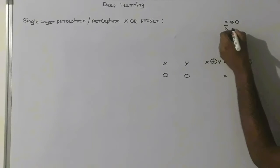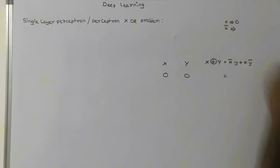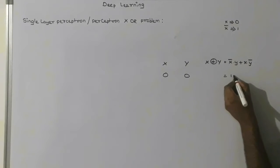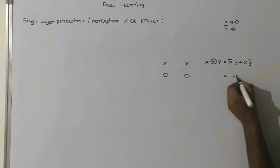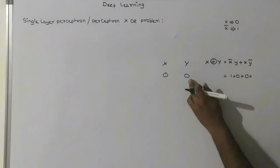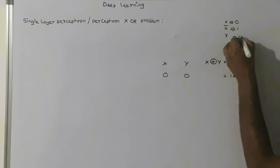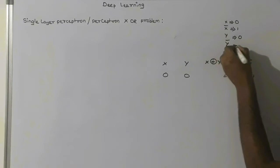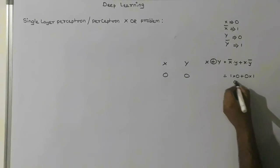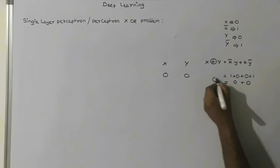x-bar is the opposite of x, so if x is 0, x-bar is 1. So x-bar into y is 1 into 0, plus x into y-bar is 0 into 1. So 1 into 0 is 0, plus 0 into 1 is 0, so 0 plus 0 is equal to 0.